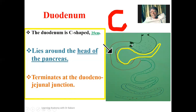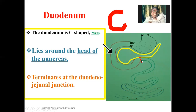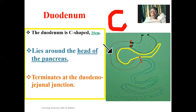The duodenum begins at the pylorus, which is the terminal region of the stomach. Around the pylorus we have the pyloric sphincter, which helps to regulate the rate at which food substances are released into the duodenum. The duodenum extends from this region to where it terminates at the duodenojejunal junction — the junction where the duodenum becomes continuous with the jejunum. So the region from the pyloric sphincter running through this course to where it becomes the jejunum is where we have the duodenum.